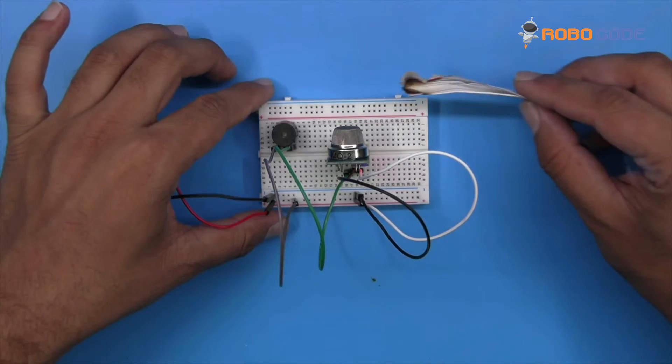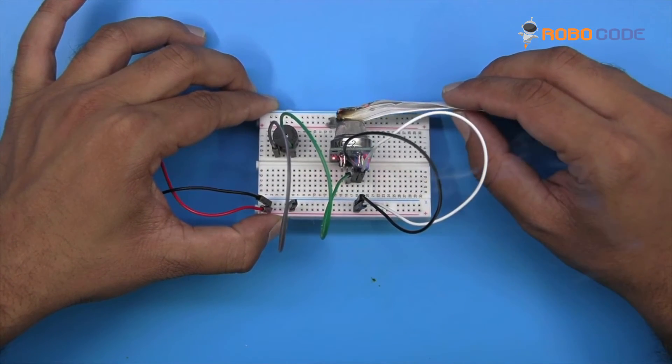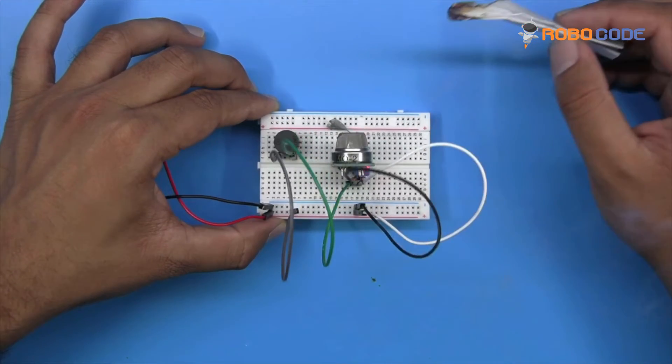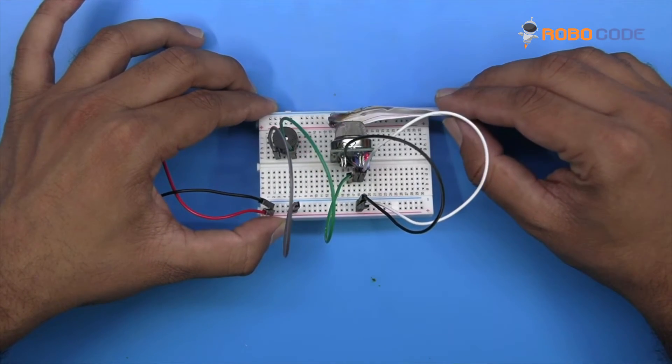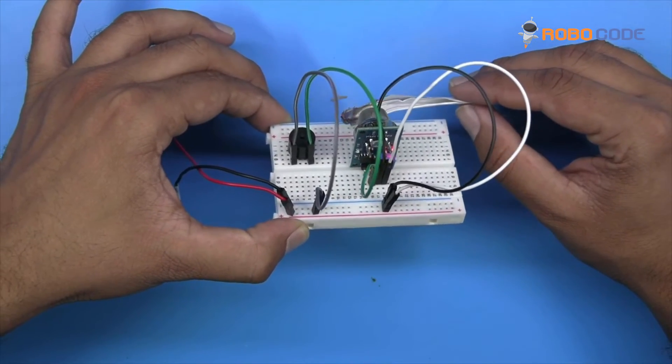Once this is done, we'll take a paper, burn it, and then place it right next to the gas sensor. You can listen to the sound and this way you can try out this experiment.